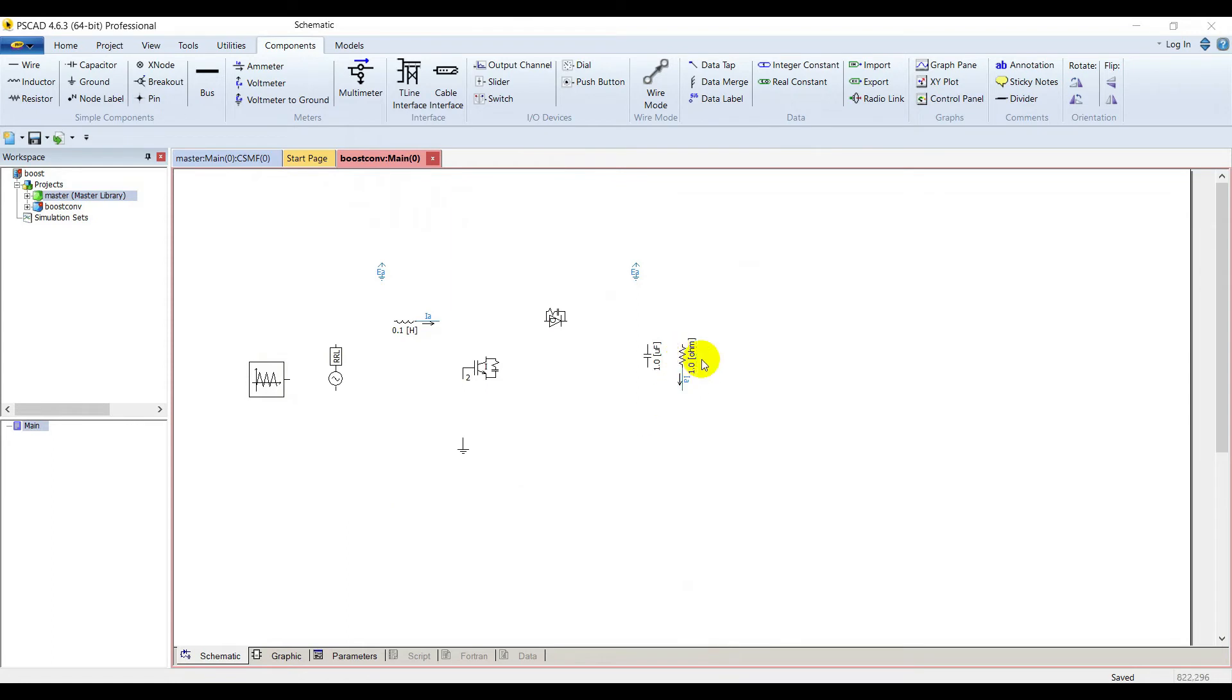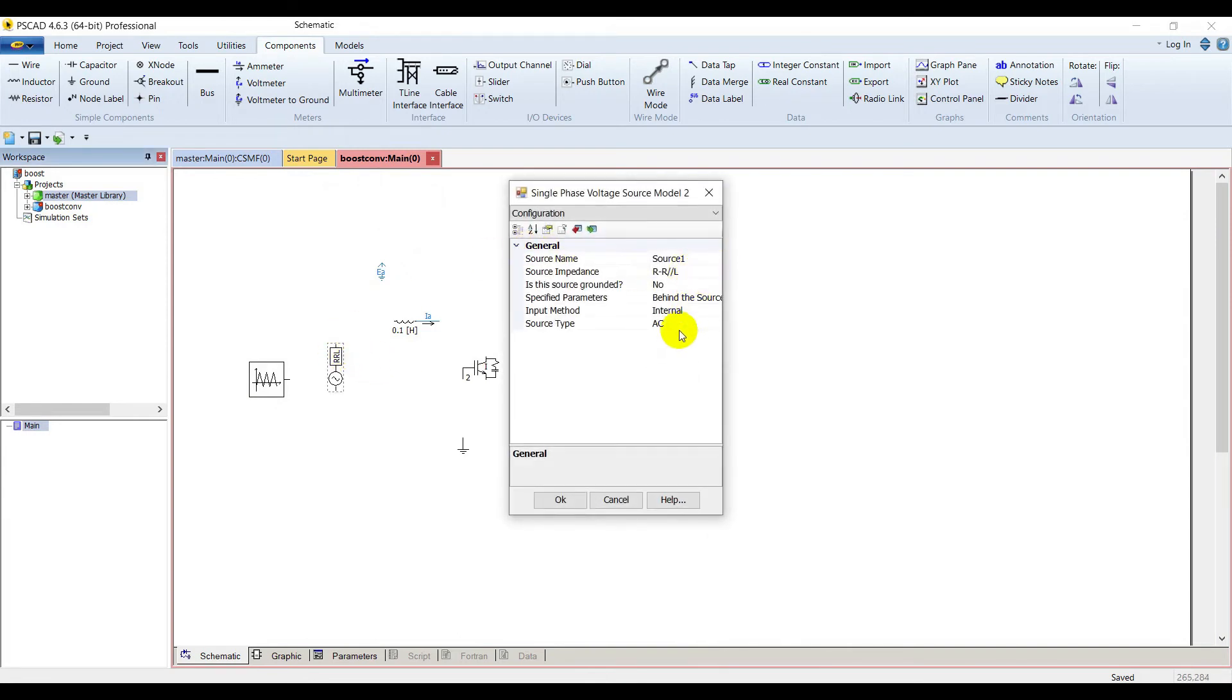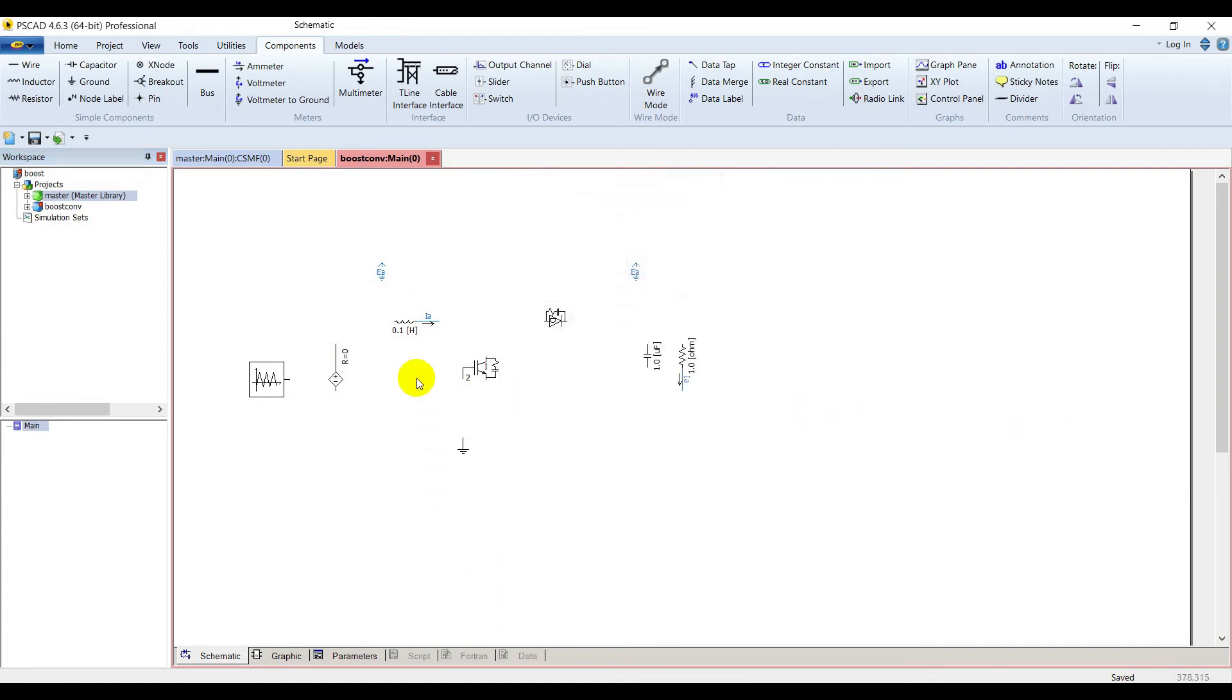We have arranged everything in the right fashion. Now let's configure everything before we connect them. Go to configuration. It's a DC source, it's an ideal source. Go to parameters to set its voltage, it's 12 volts. The ramp time is 1 millisecond.